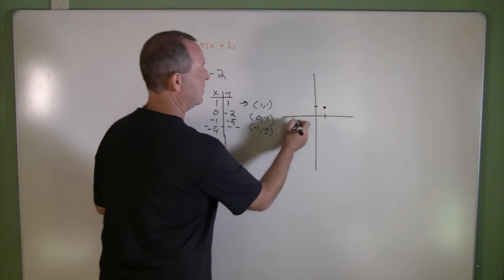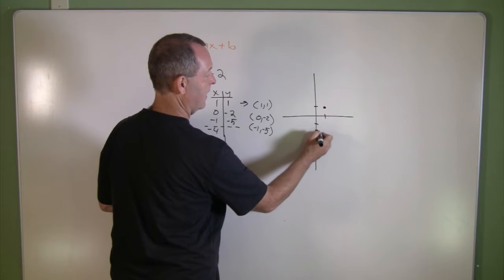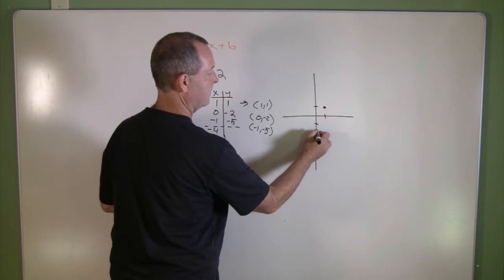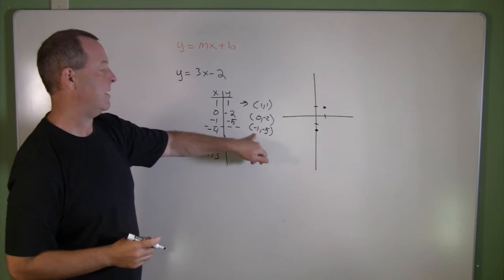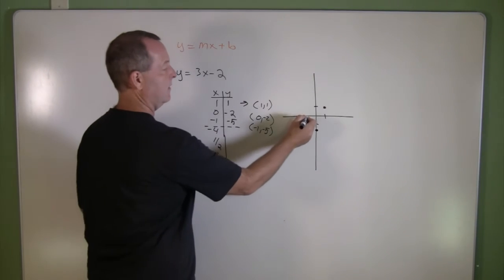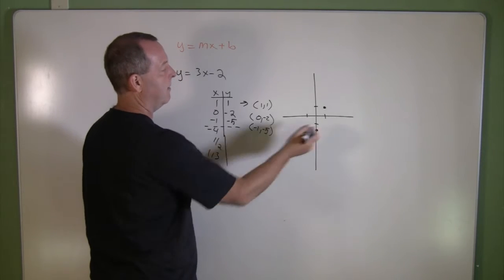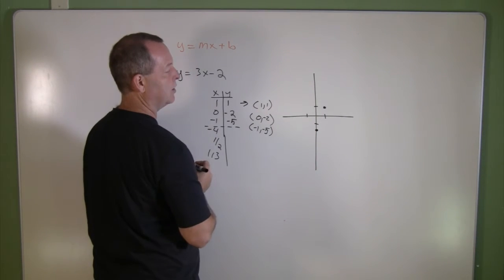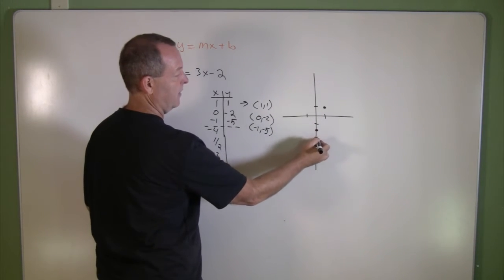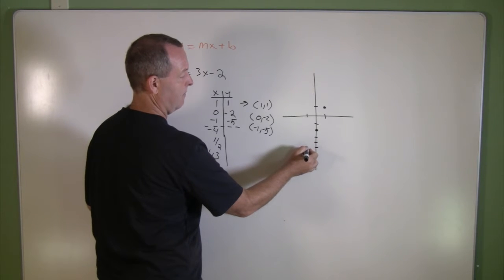0 and negative 2, so over 0 and down 2. I have a point there. And then I have the point negative 1, negative 5. Back 1, which is the negative direction, and down 5: 2, 3, 4, 5. I have a point right there.